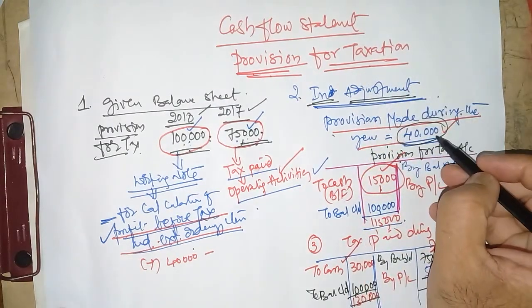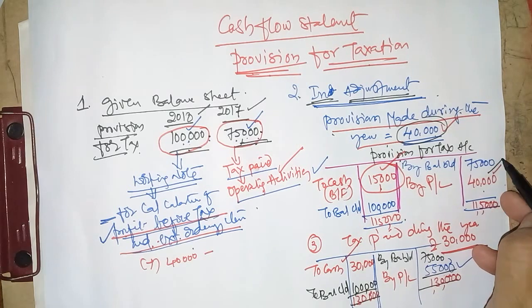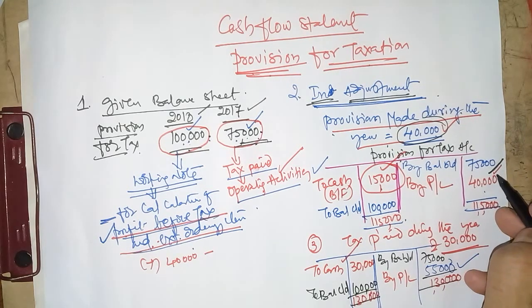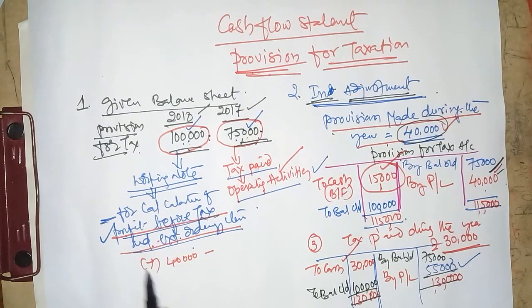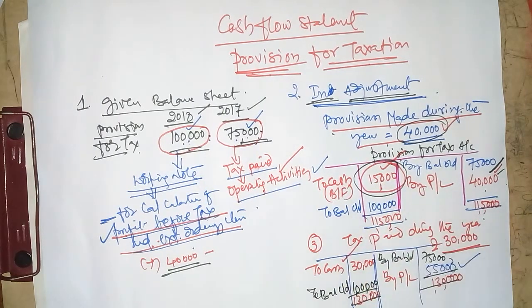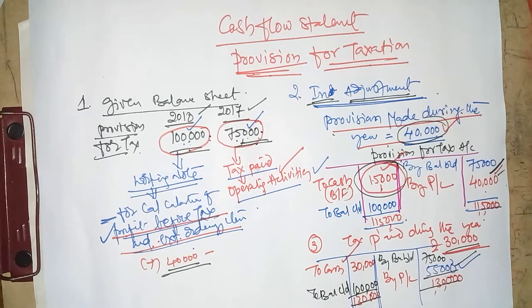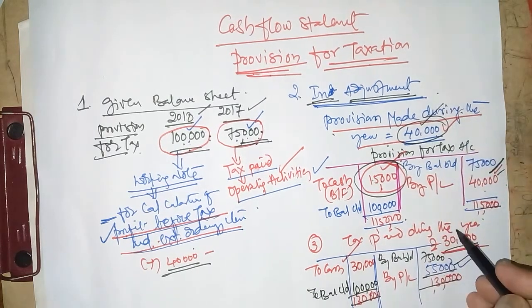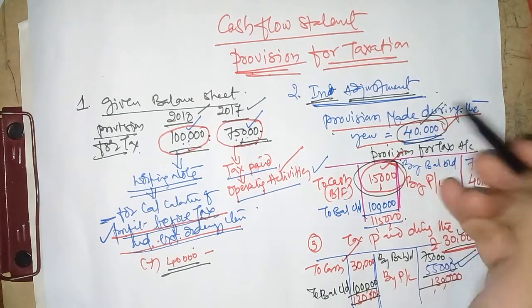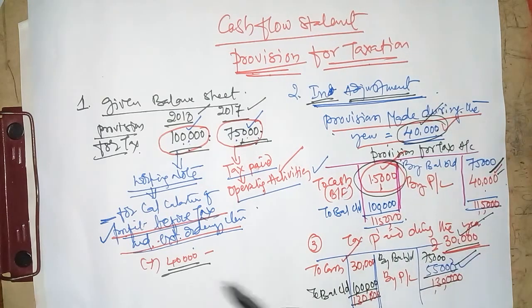If provision made during the year is given in adjustments, then we need to prepare a provision for taxation account. Provision made is credited to the provision for taxation account, and this will be added in the calculation of profit before tax and extraordinary items. The balancing figure of 15,000 will be recorded as tax paid during the year. If tax paid is given in the question, we calculate provision made during the year. Either provision made or tax paid will be given — if made is given, we calculate tax paid; if paid is given, we calculate provision made.